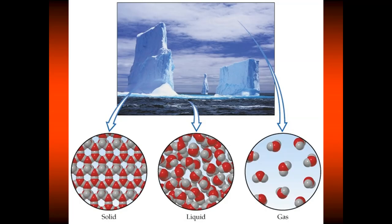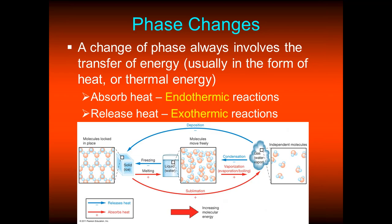Converting from one phase into another always involves the transfer of energy, usually in the form of heat. There are two types of reactions: endothermic reactions, which absorb heat, and exothermic reactions, which release heat. If you're melting ice to create liquid water, you're absorbing heat — so going from solid to liquid to gas involves endothermic reactions (shown in red). Conversely, going from gas to liquid to solid involves exothermic reactions, releasing heat.